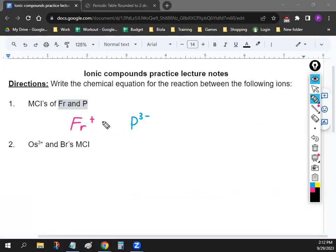Negative, right? It's three minus. So we got to balance it out by adding some positive Frs. So if we add a total of three, it can balance out the negative three right here.